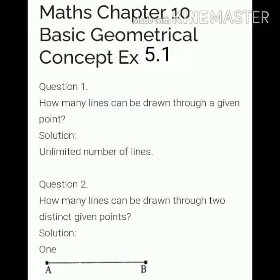Exercise 5.1, question number one. How many lines can be drawn through a given point? It means from one given point how many lines can we draw. As we earlier discussed, if there is one point we can draw unlimited number of lines.